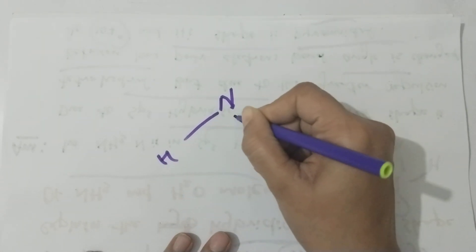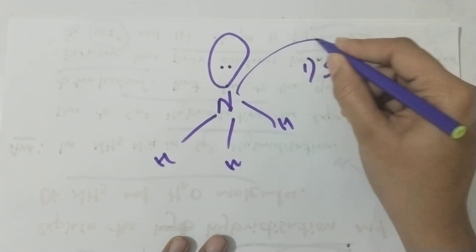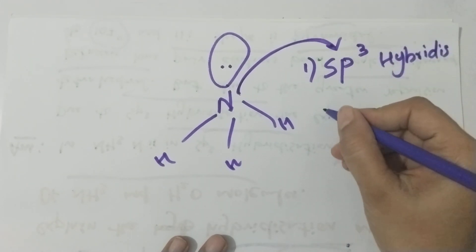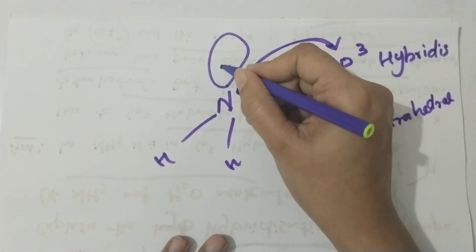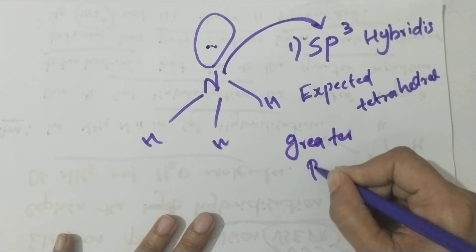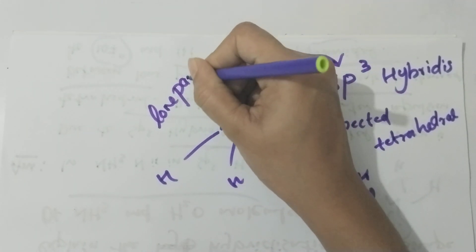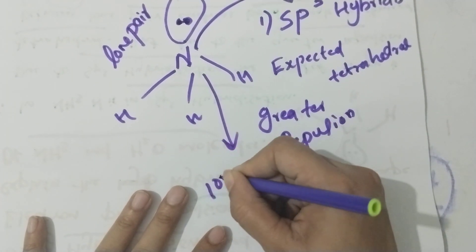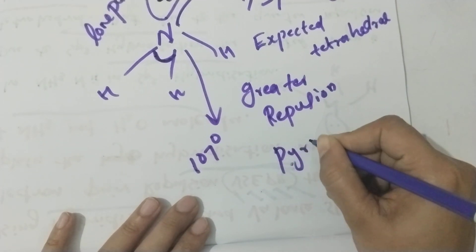In NH3, there is one lone pair on nitrogen with sp3 hybridization. The expected shape is tetrahedral, but greater repulsion between the lone pair electrons causes the bond angle to change to 107–108 degrees. So the actual shape of NH3 is pyramidal.